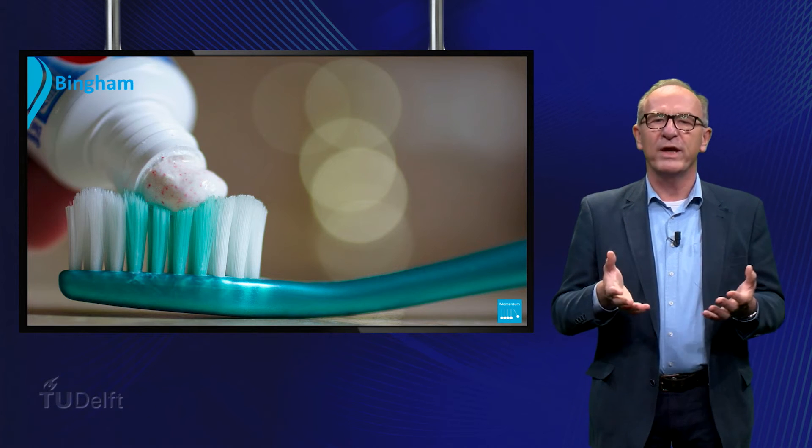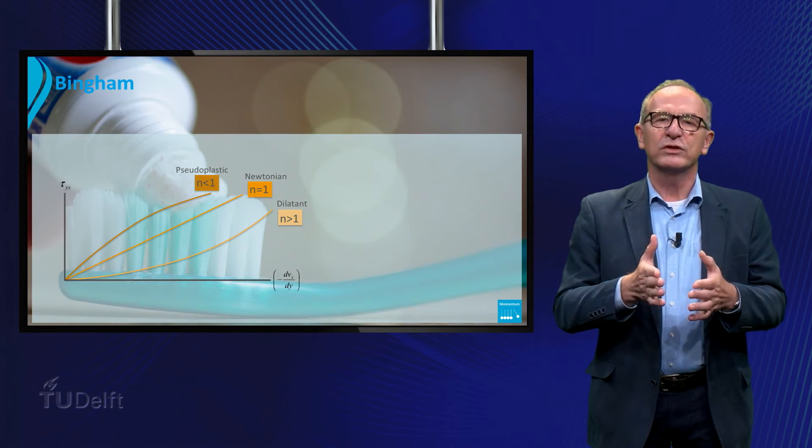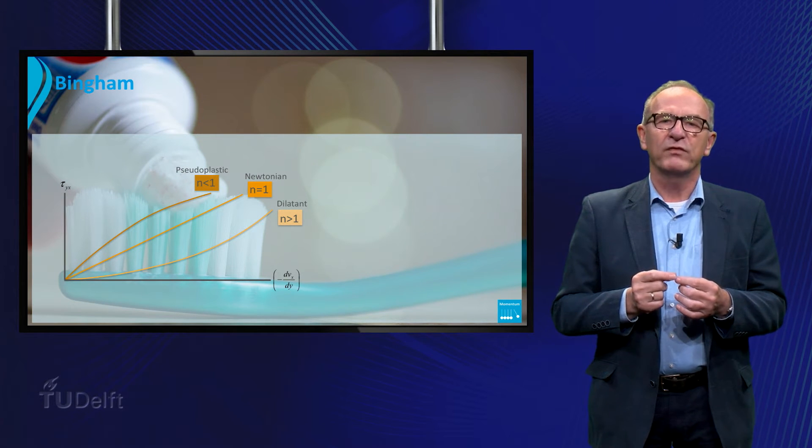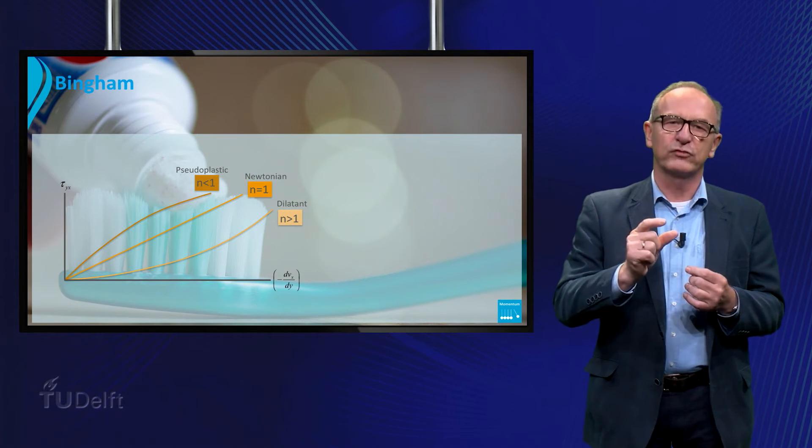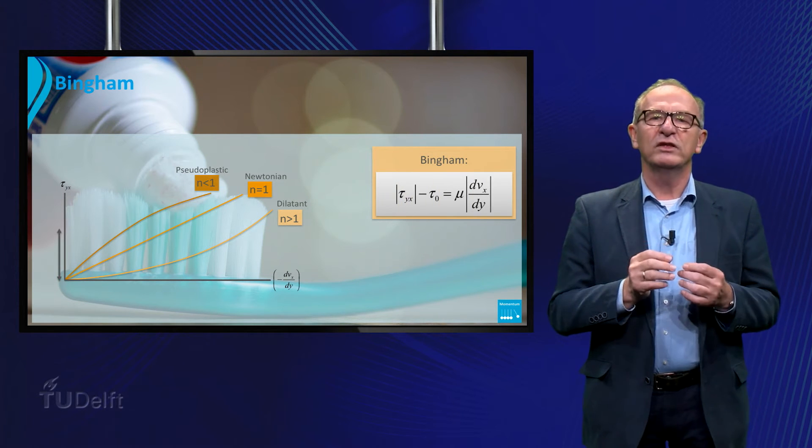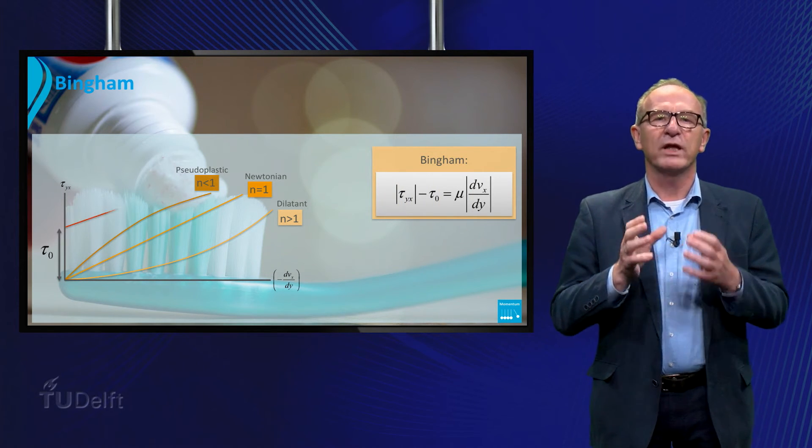And what about toothpaste and some paints? These fluids are so-called Bingham fluids. They can be characterized by the fact that first a certain yield stress is necessary before they start to flow. After this shear stress the fluid behaves like a Newtonian fluid.